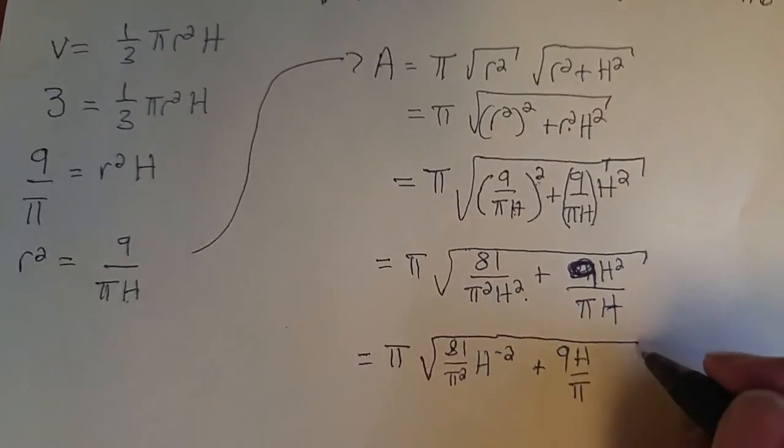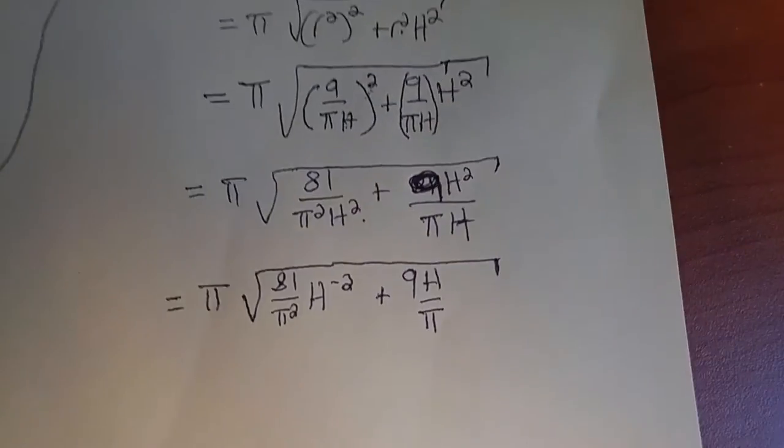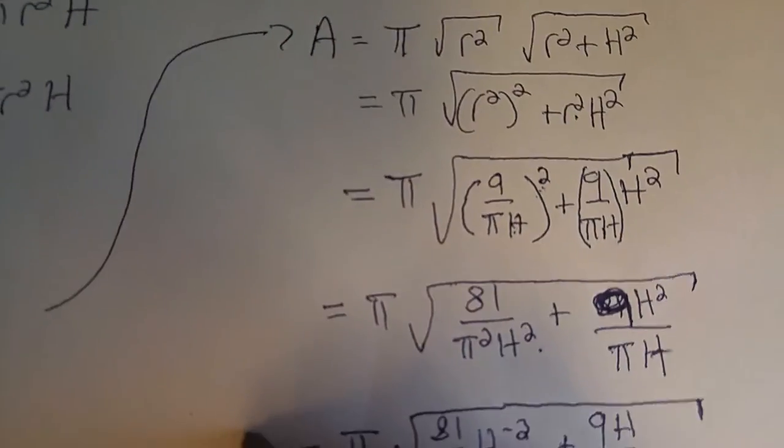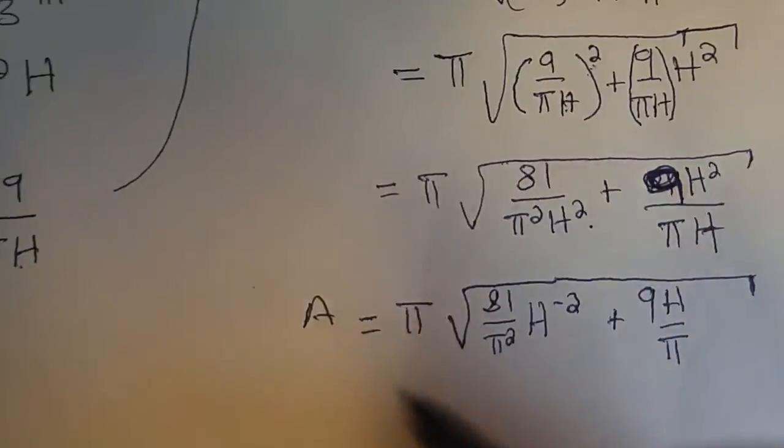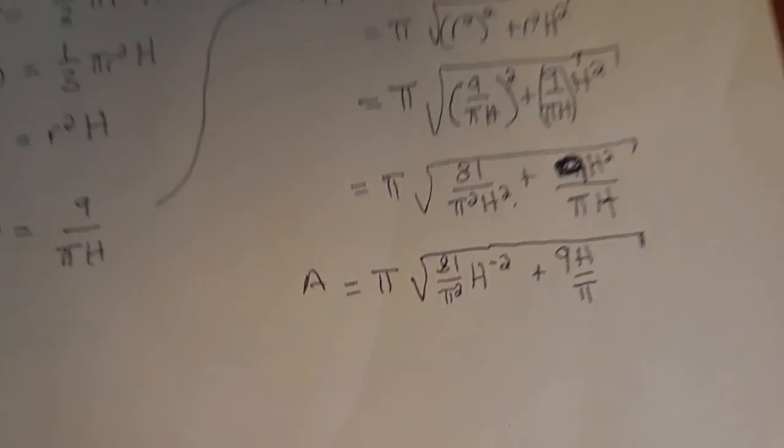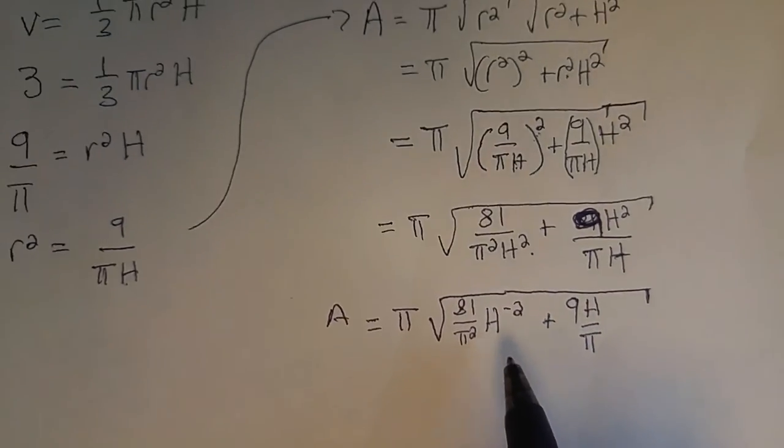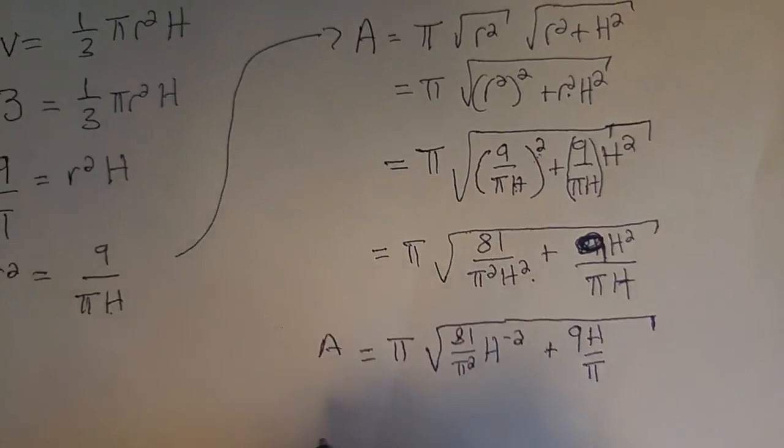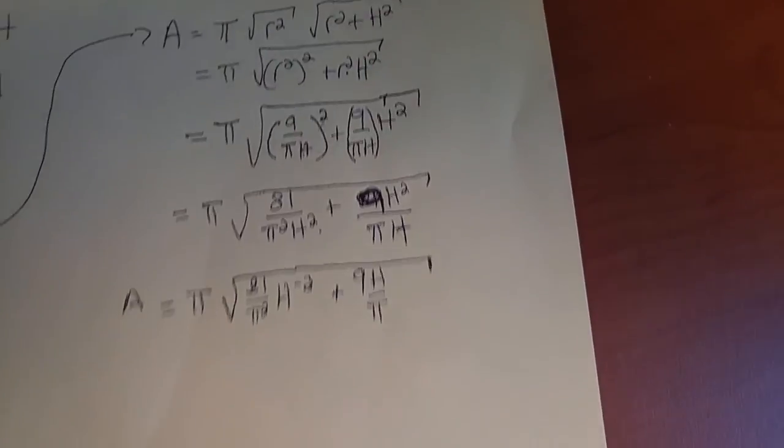Okay, that is our function in terms of h. So we have an area function in terms of the variable h, and what we want to do next is find the max and min of this. So that's the next video.